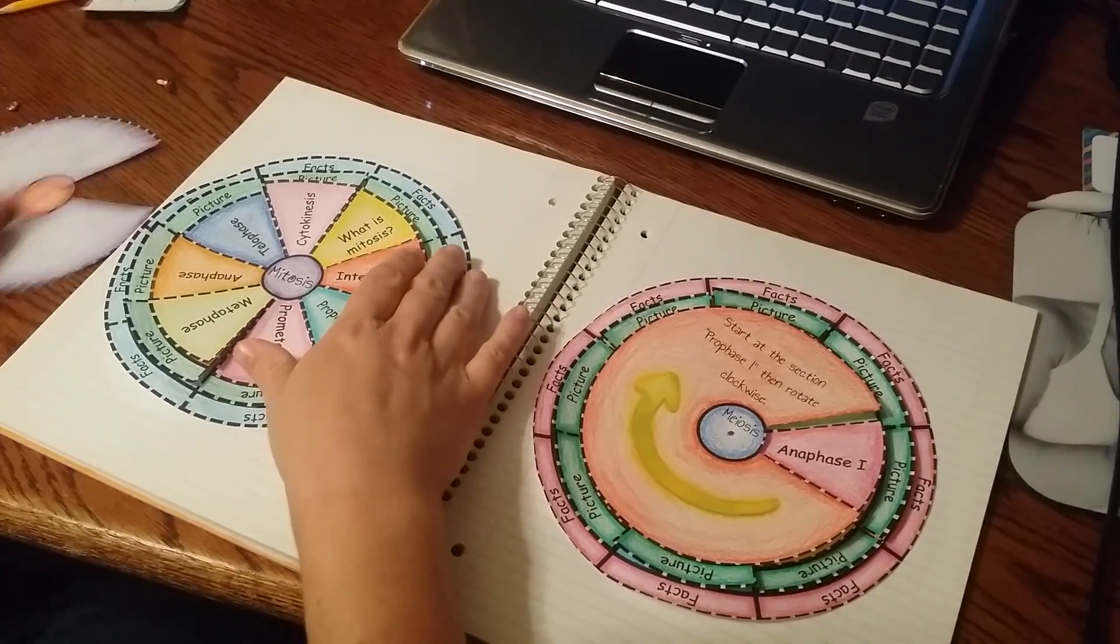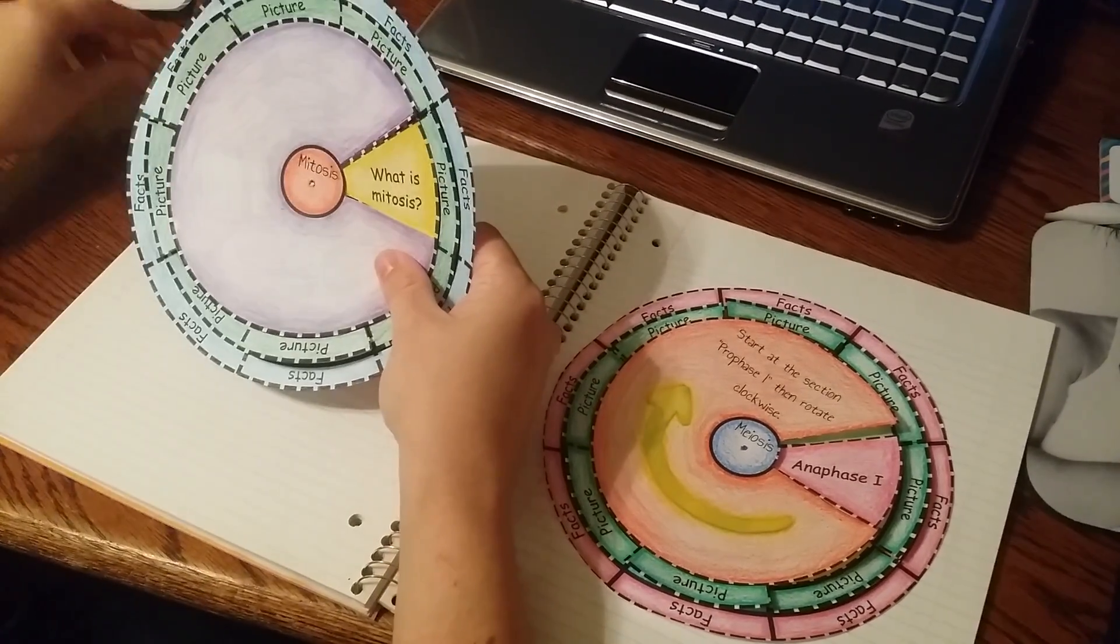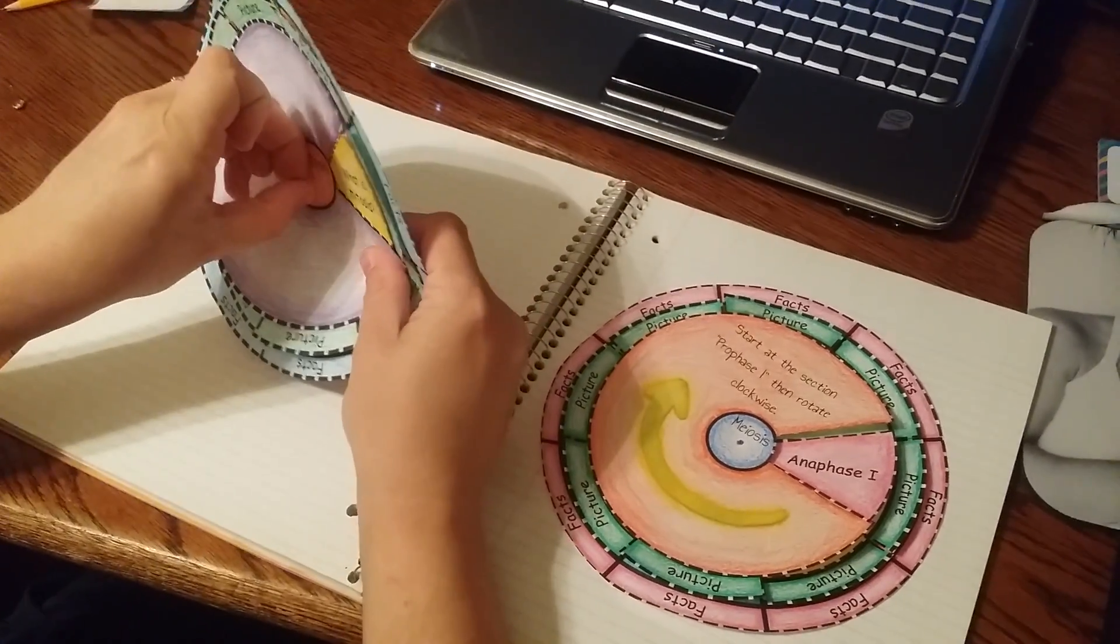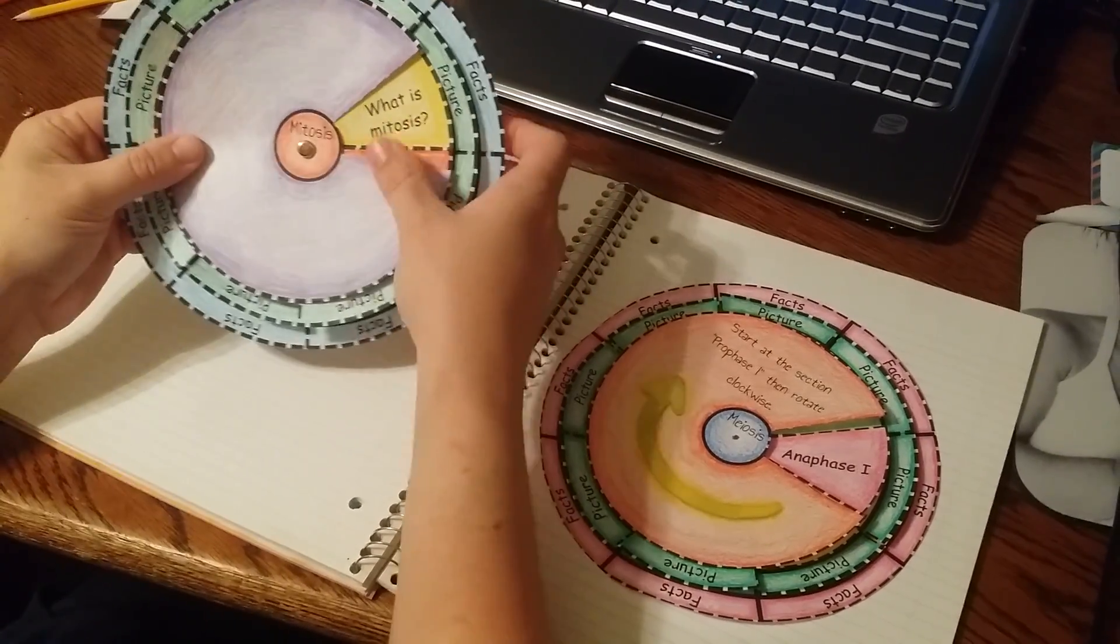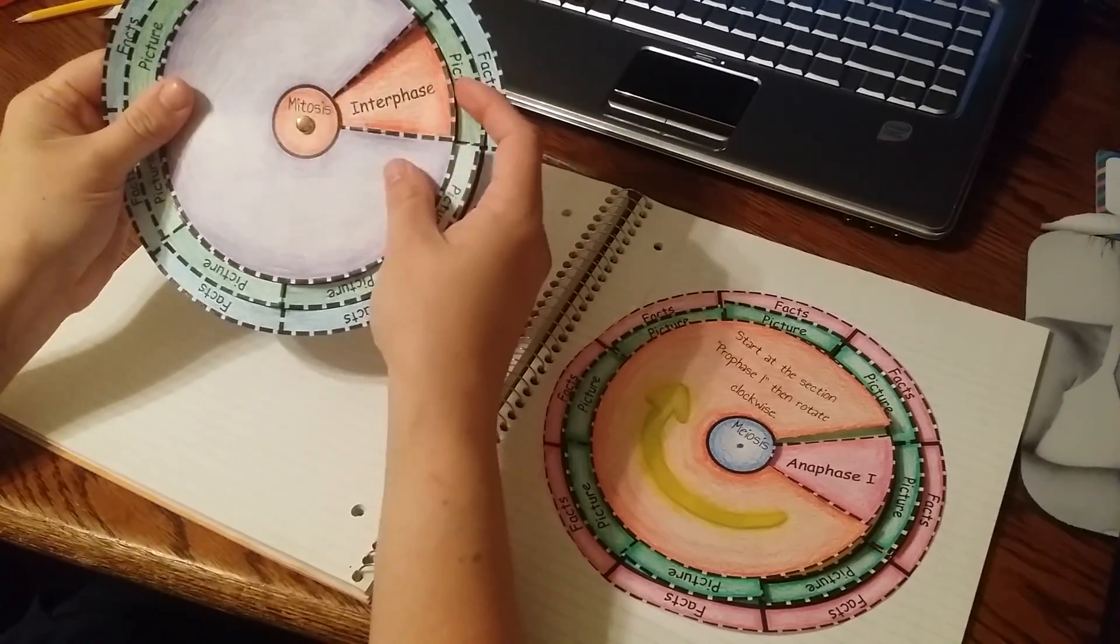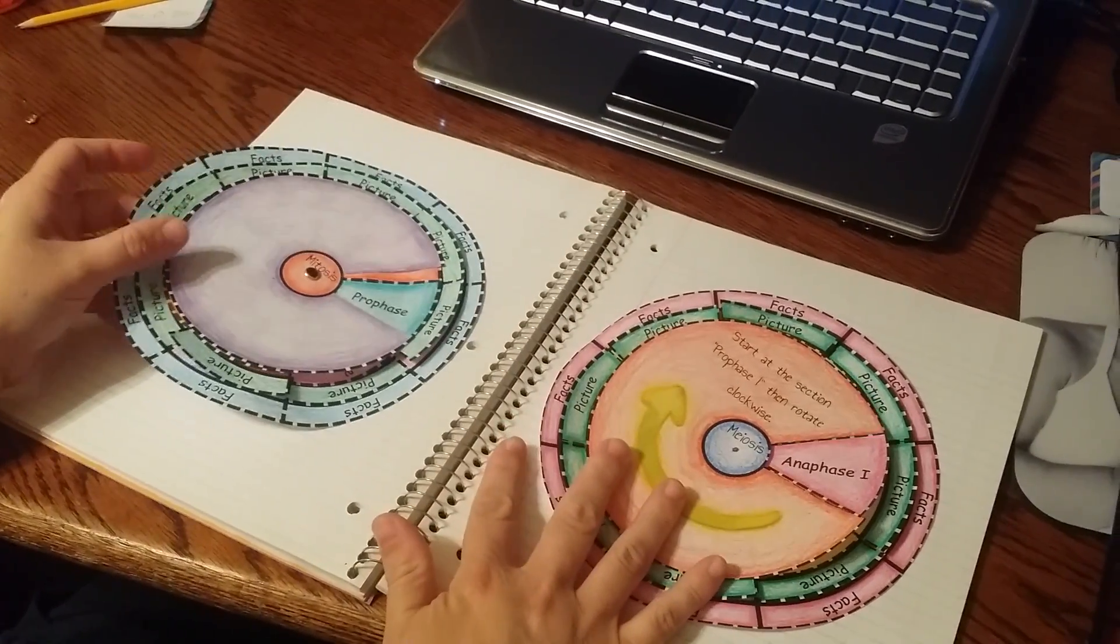I also have a cover for this for my mitosis. Again, students will put the paper fastener, as you can see, and then they can just move around the wheel and study all the different phases. If you like these foldables,